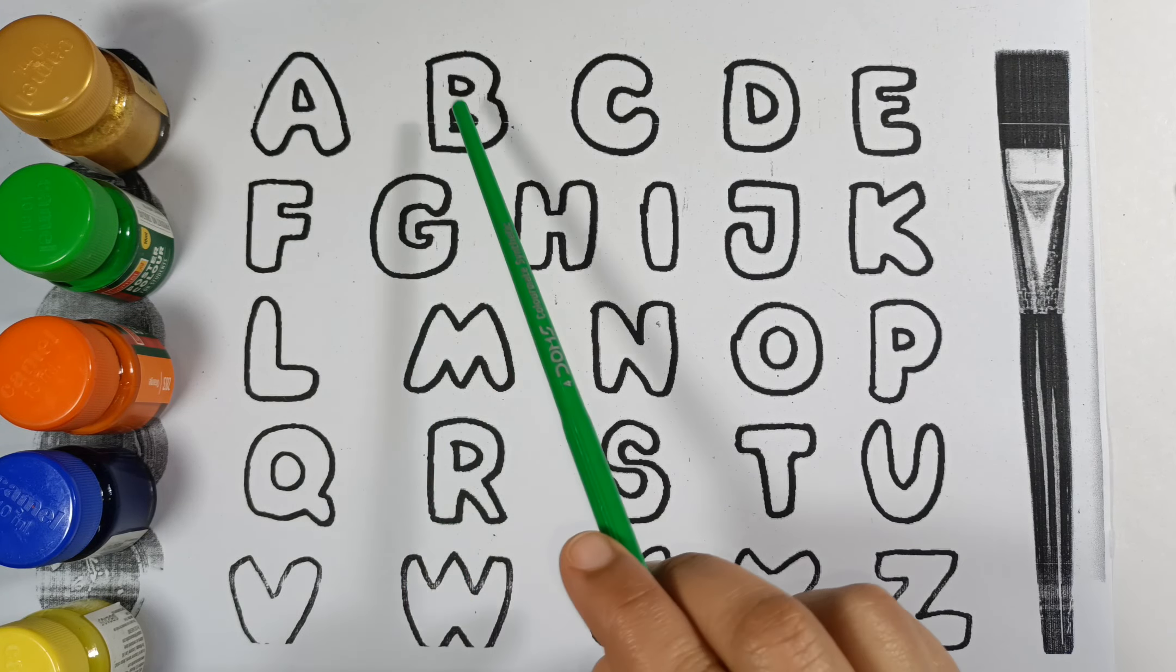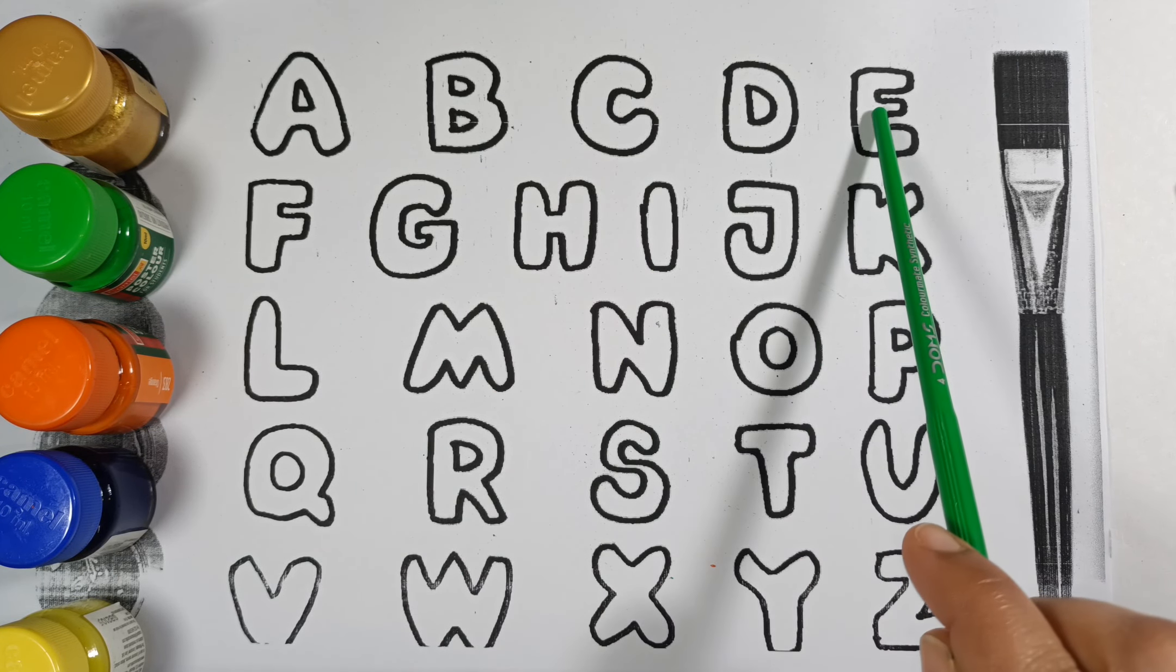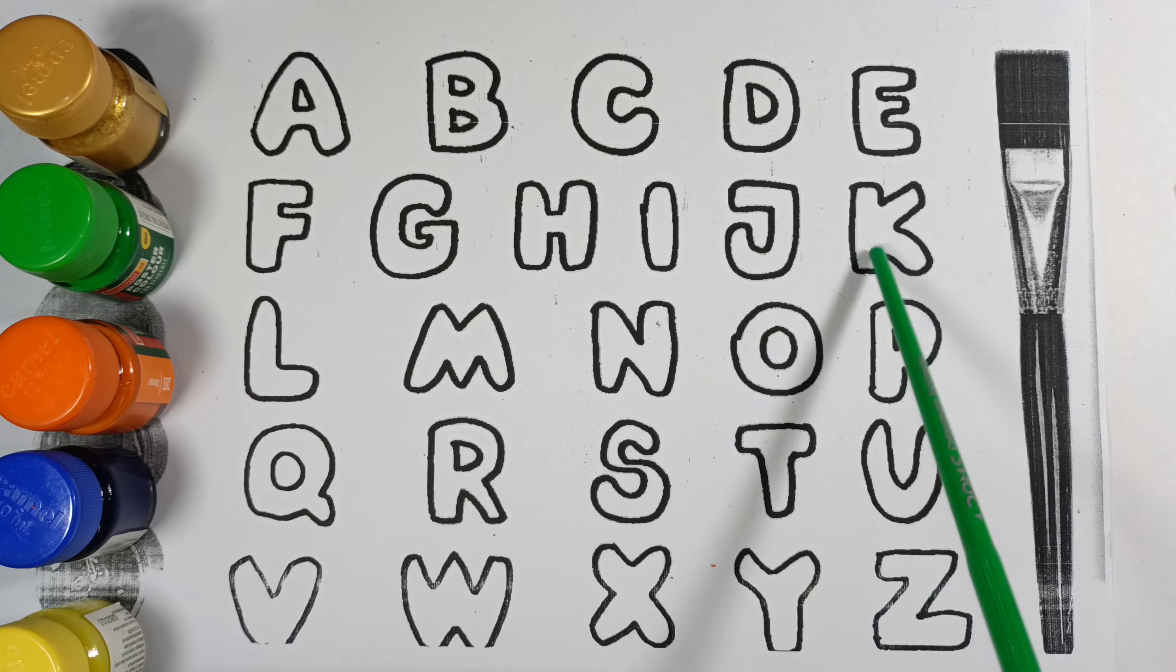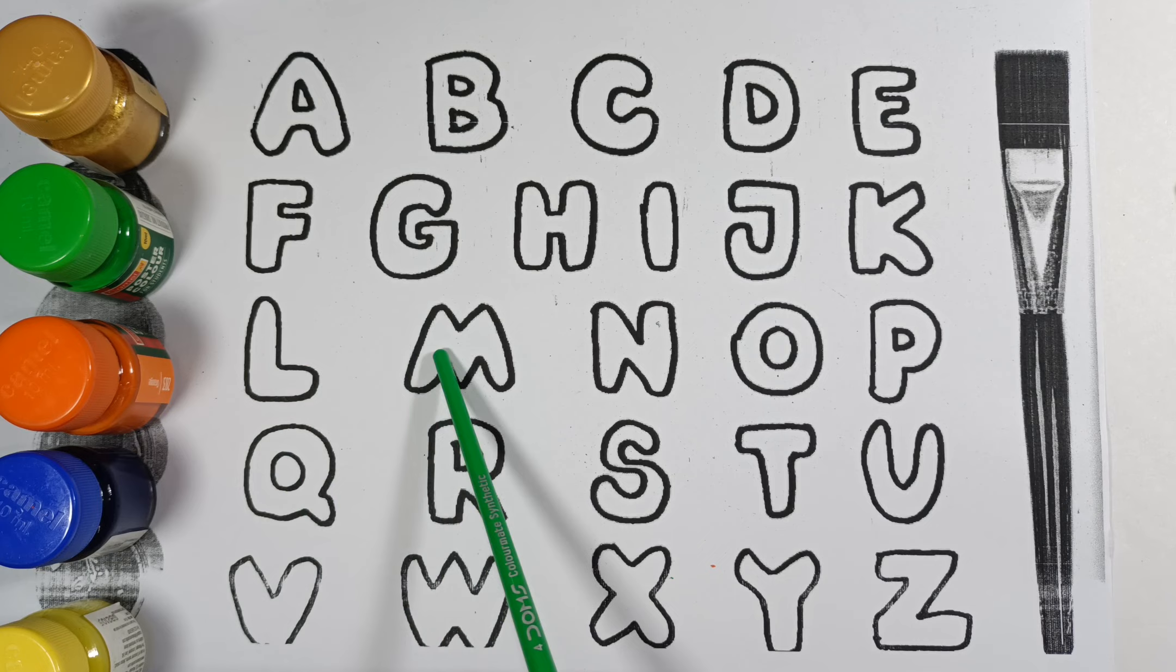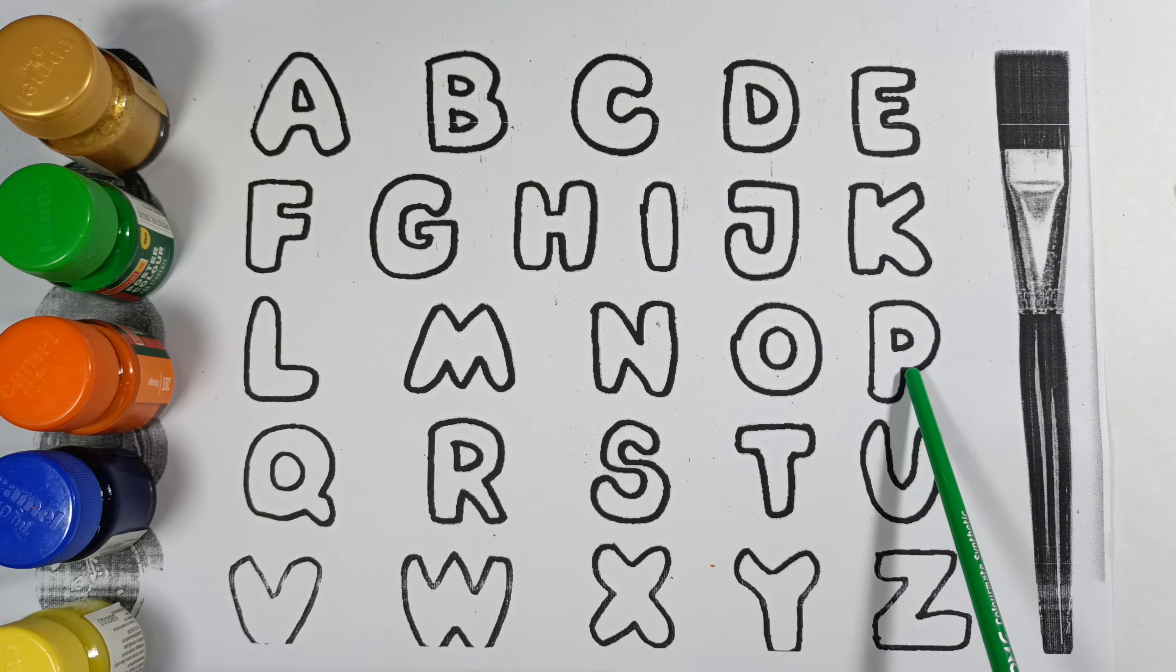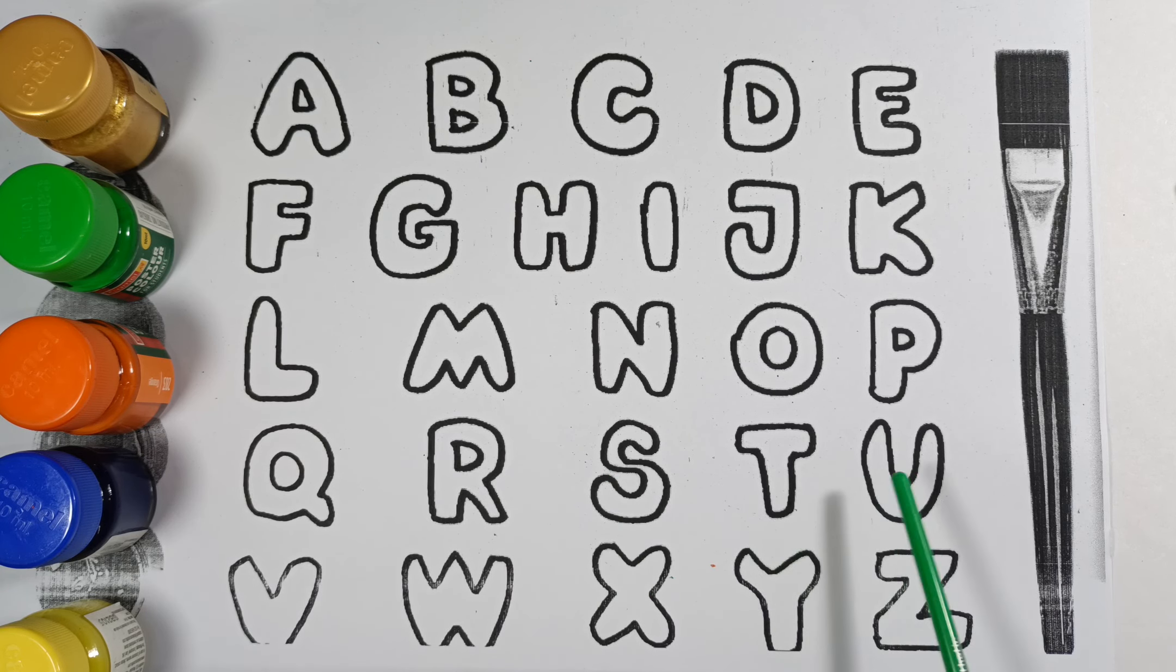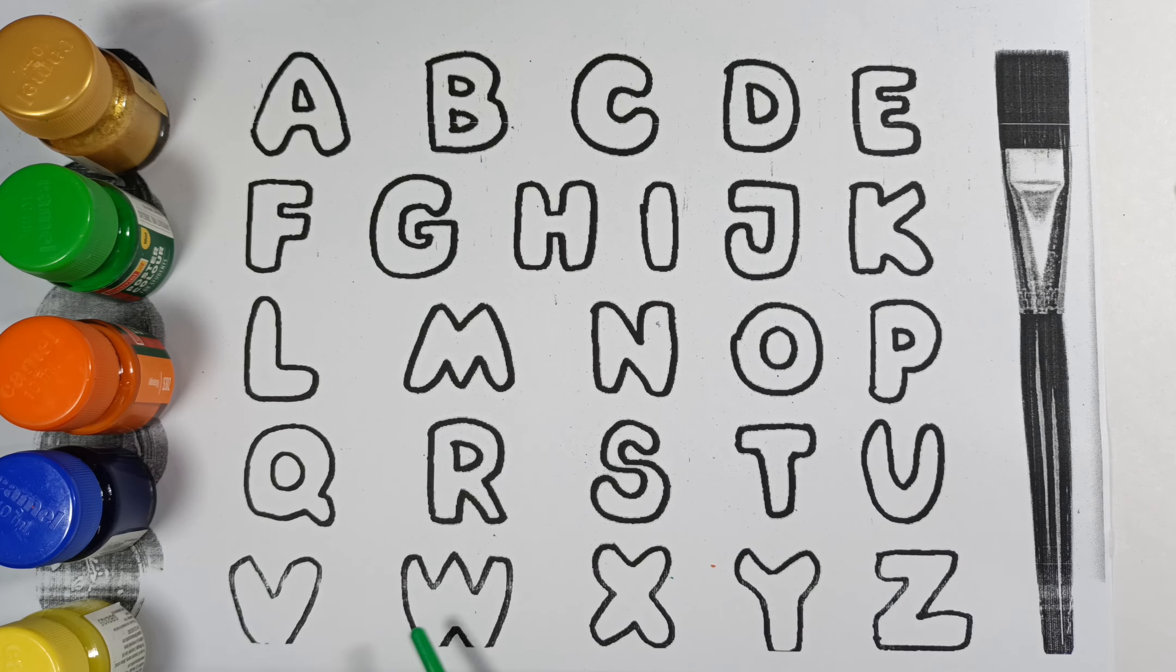Alphabets A, B, C, D, E, F, G, H, I, J, K, L, M, N, O, P, Q, R, S, T, U, V, W, X, Y, Z. Let's color alphabets.